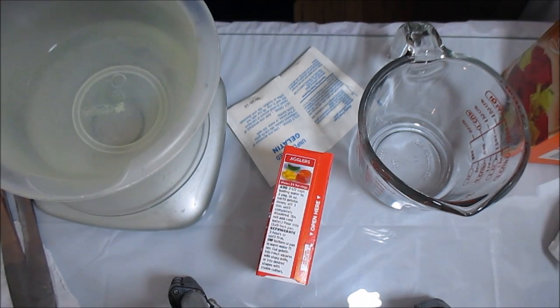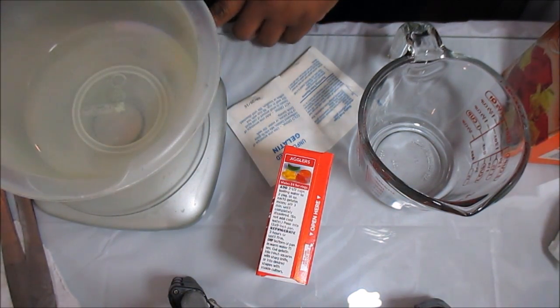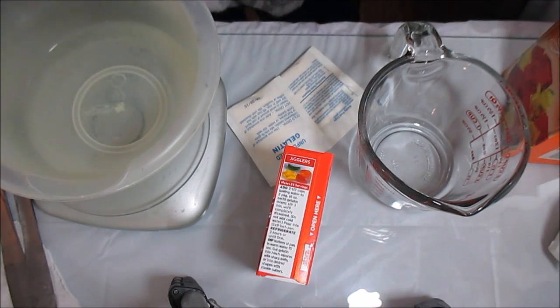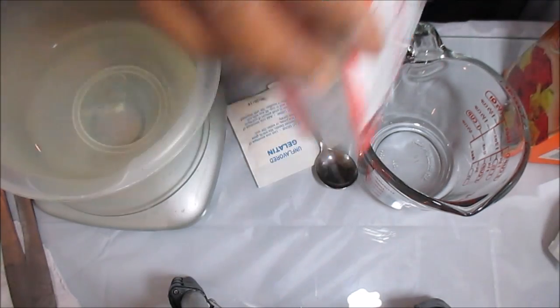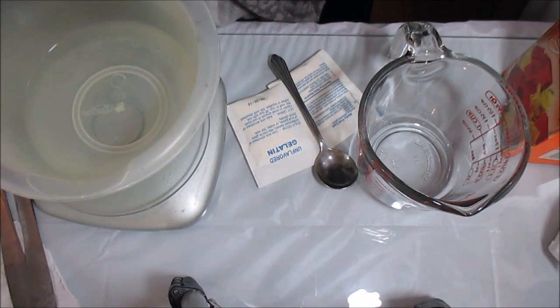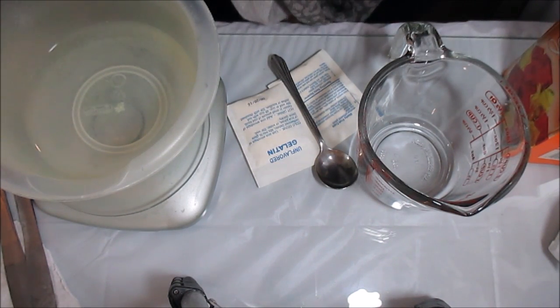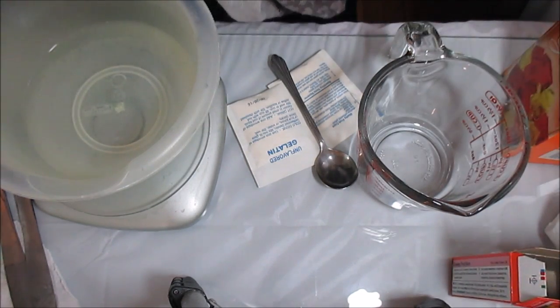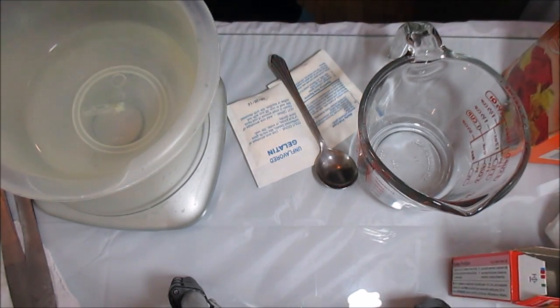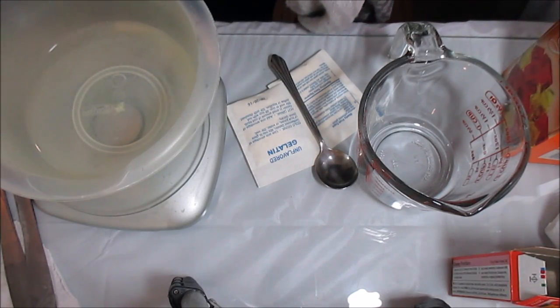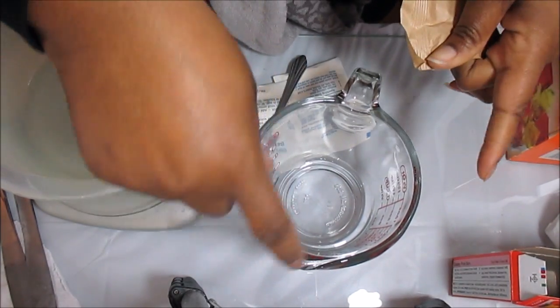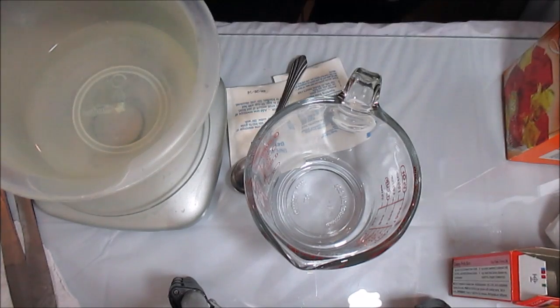And then you're going to need 10 ounces of boiling hot water, which I already have here. And I guess I can turn my scale off. I'm going to do something that I haven't saw anyone else do. I'm going to put like some little candies or something in mine and see how that goes.